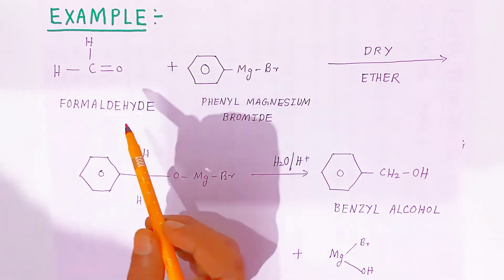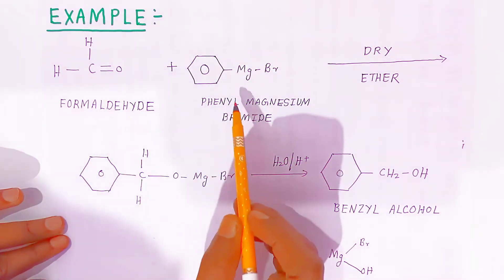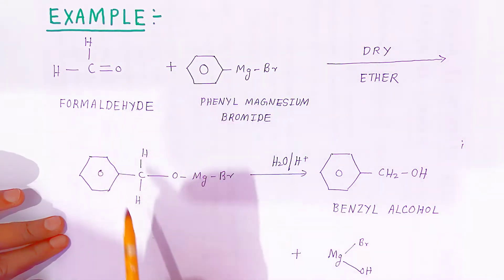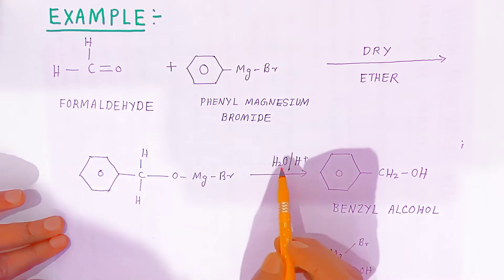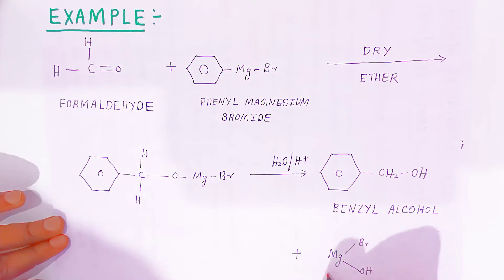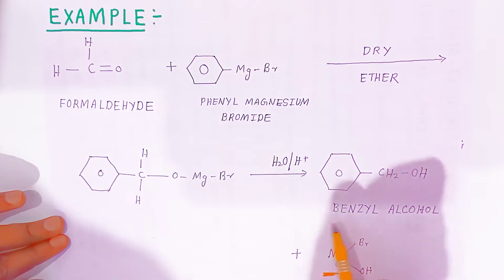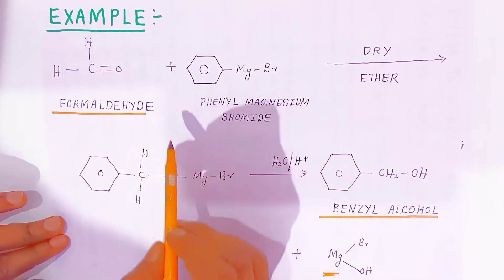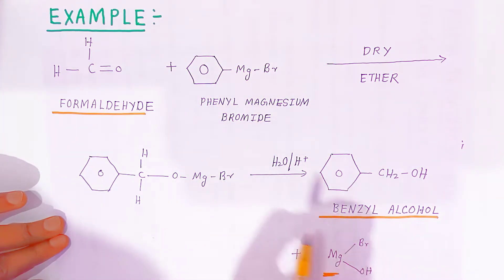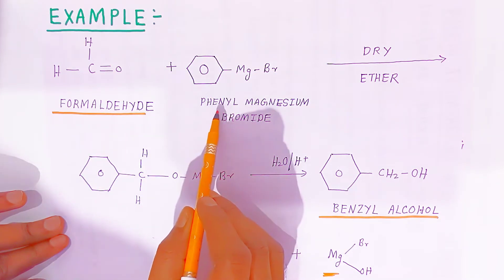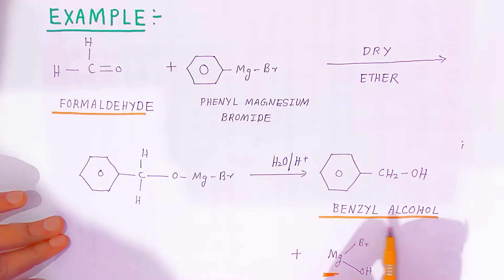For example, when formaldehyde reacts with phenyl magnesium halide in presence of dry ether, an addition product is obtained. On acidic hydrolysis in presence of water, benzyl alcohol and magnesium bromide hydroxide are obtained as products. This way, formaldehyde is converted into benzyl alcohol using phenyl magnesium bromide.